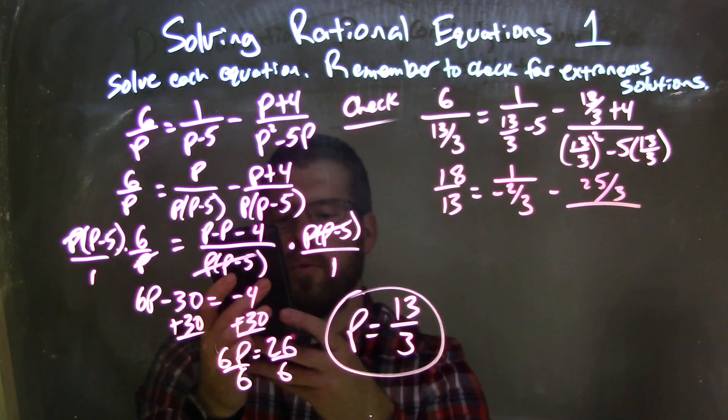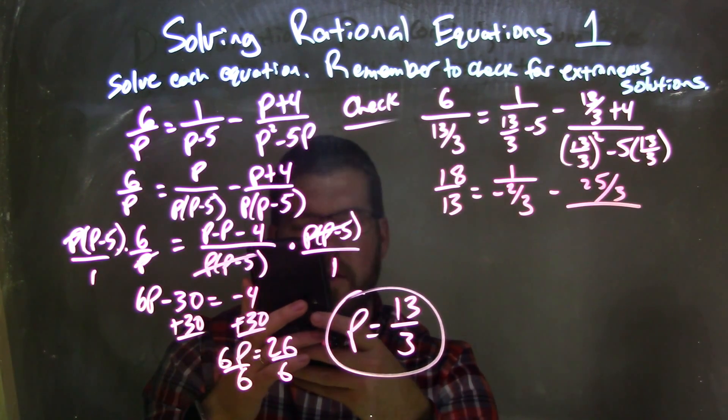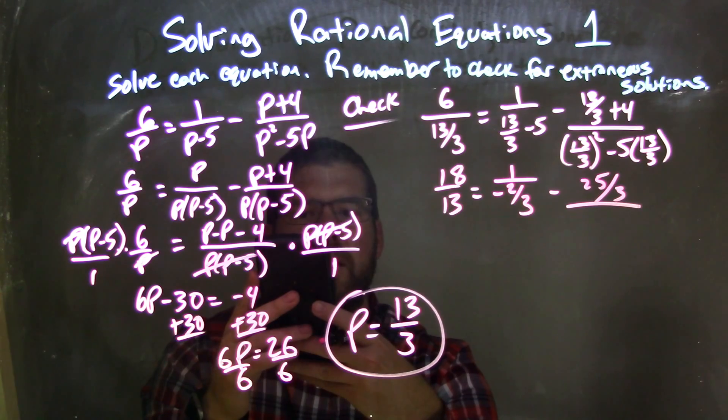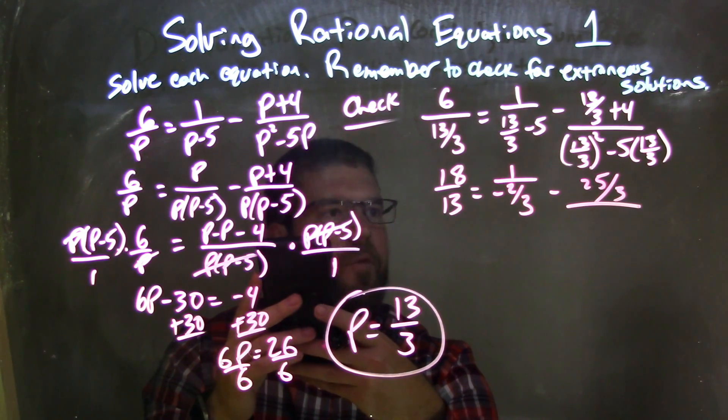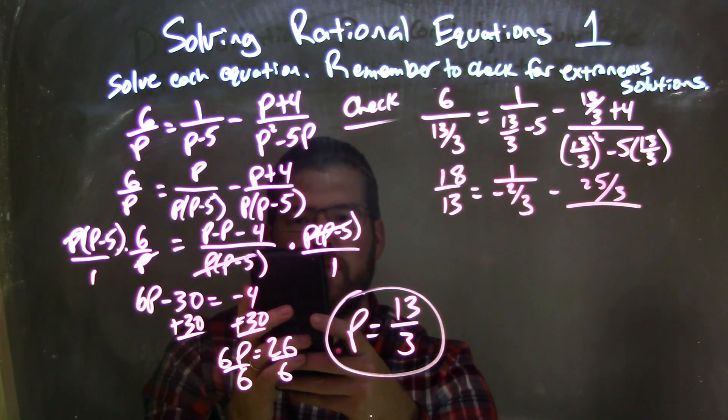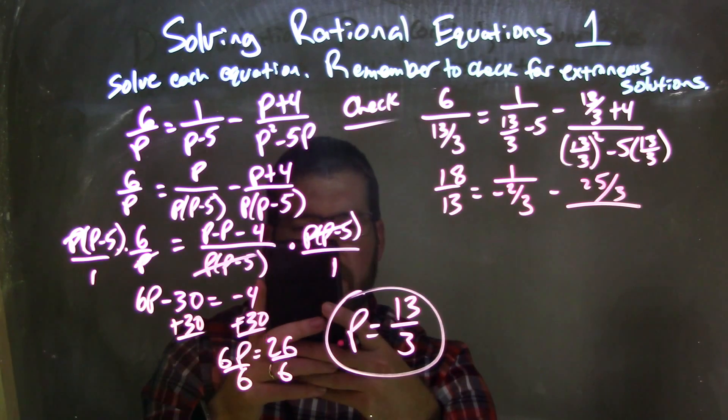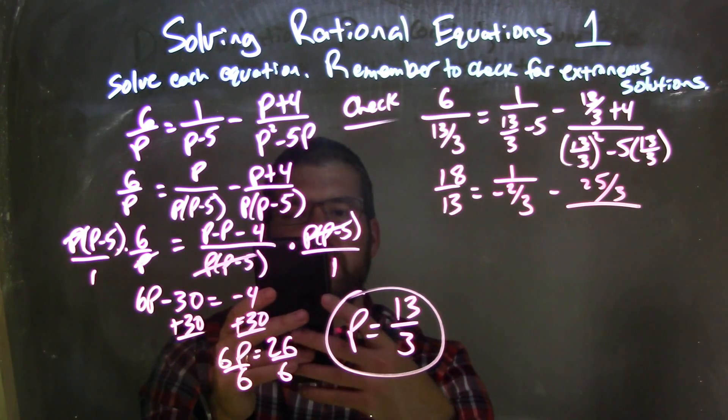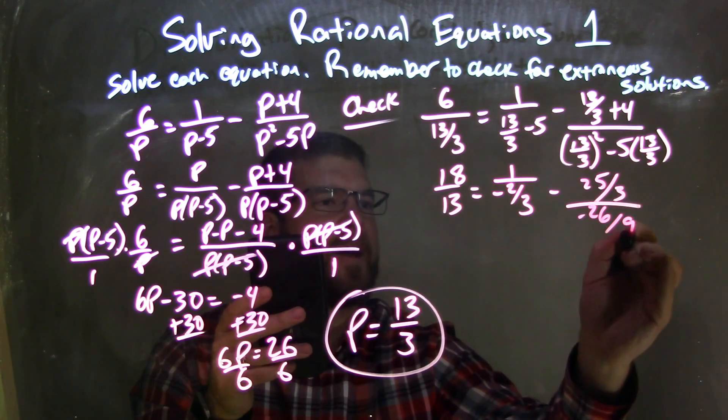The denominator, I'm going to do this whole denominator at once: 13 divided by 3 squared comes down to be 18.777 repeating, minus 5 times 13 divided by 3, and that fraction comes down to be negative 26 over 9.